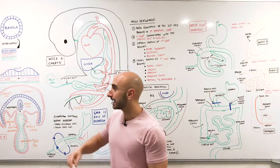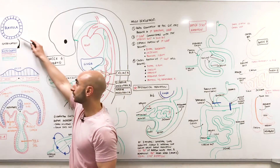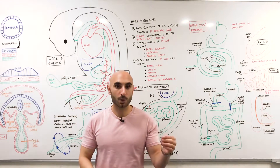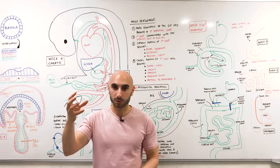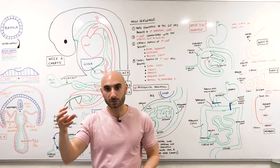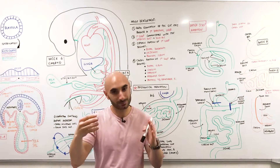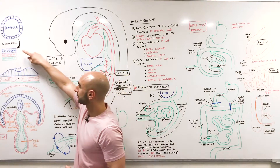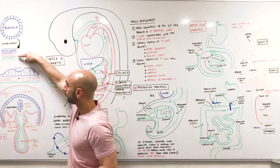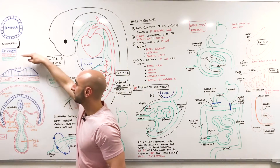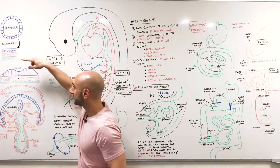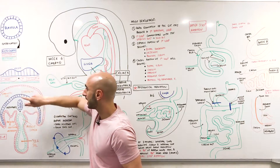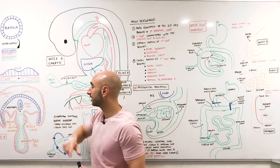Let's begin at the beginning, at the ball of cells called the blastula, which is the result of fertilization when a sperm fertilizes an egg. This ball travels down the uterine tube into the uterine canal, implants into the uterine wall, and the process of gastrulation will form three germ layers: the ectoderm, the mesoderm, and the endoderm.